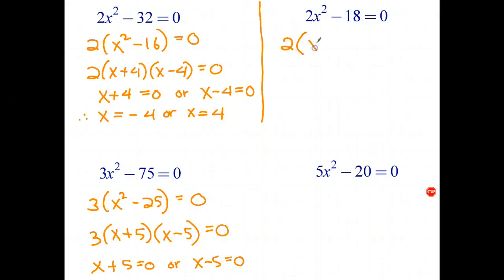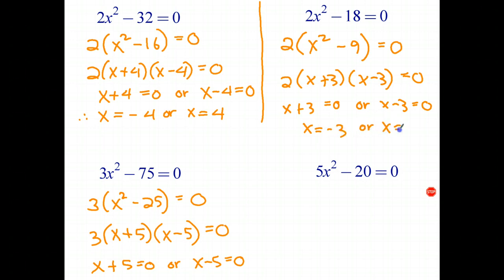With the first one, I take out a common factor of 2, and I get x squared take 9 equals 0. And factorizing using difference of squares, 2 times x plus 3 times x take 3 equals 0. So a times b is 0. The null factor law says either x plus 3 equals 0 or x minus 3 equals 0. And therefore, x is either negative 3 or x is positive 3. So there's the two solutions to that one.